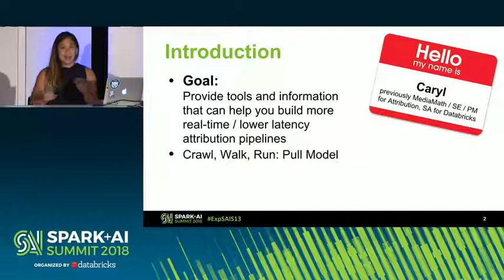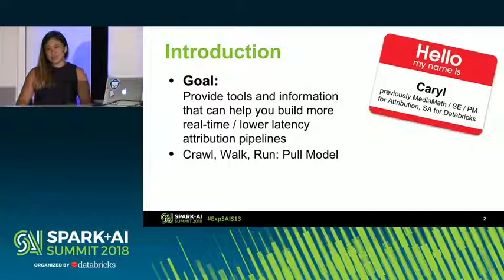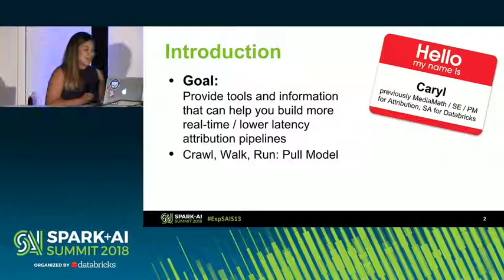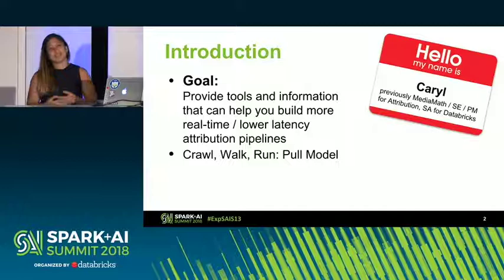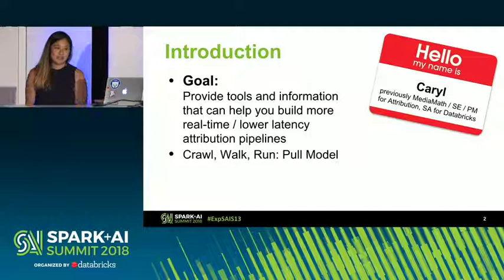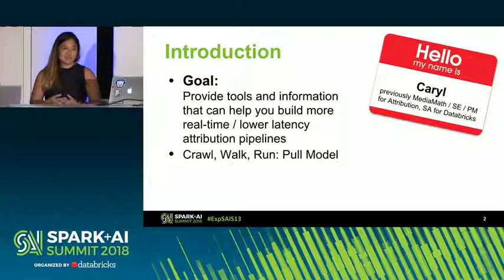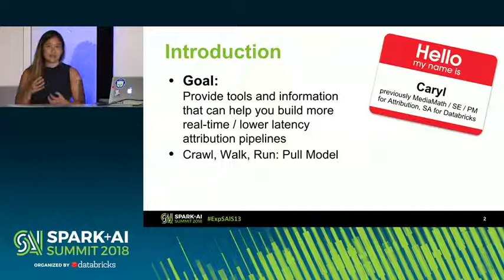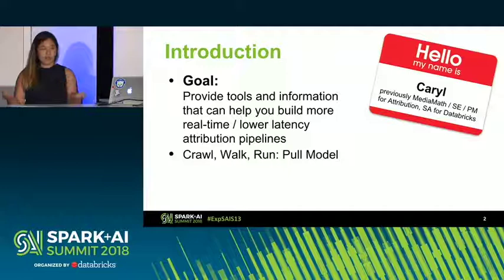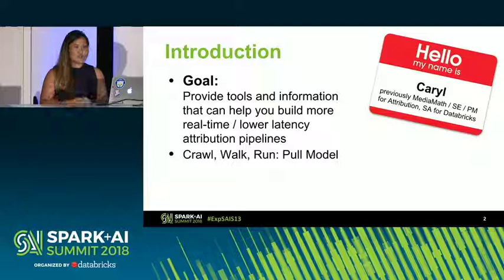My goal for today is to provide you with some tools and information about Databricks Delta that can help you build more real-time, lower-latency attribution pipelines — and not just the real-time aspect, but to abstract away a lot of the overhead that comes with maintaining the pipelines. The goal is not to go 0 to 60 and have you developing sub-millisecond latency dashboards populated with real-time attribution metrics. Most clients I talk to today, about 90% of them, are developing pretty simple pipelines — generally a last-touch model, with SLAs still around 24 hours.